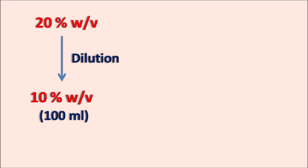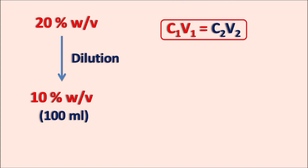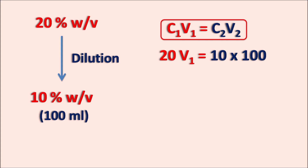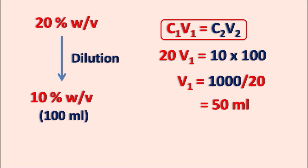To calculate how much ml of the 20% weight by volume solution we have to use, we can simply use the formula C1V1 = C2V2, where C1 is the initial concentration, V1 is the initial volume, C2 is the final concentration, and V2 is the final volume. Substituting: 20 × V1 = 10 × 100. Solving, V1 = 1000/20 = 50 ml.